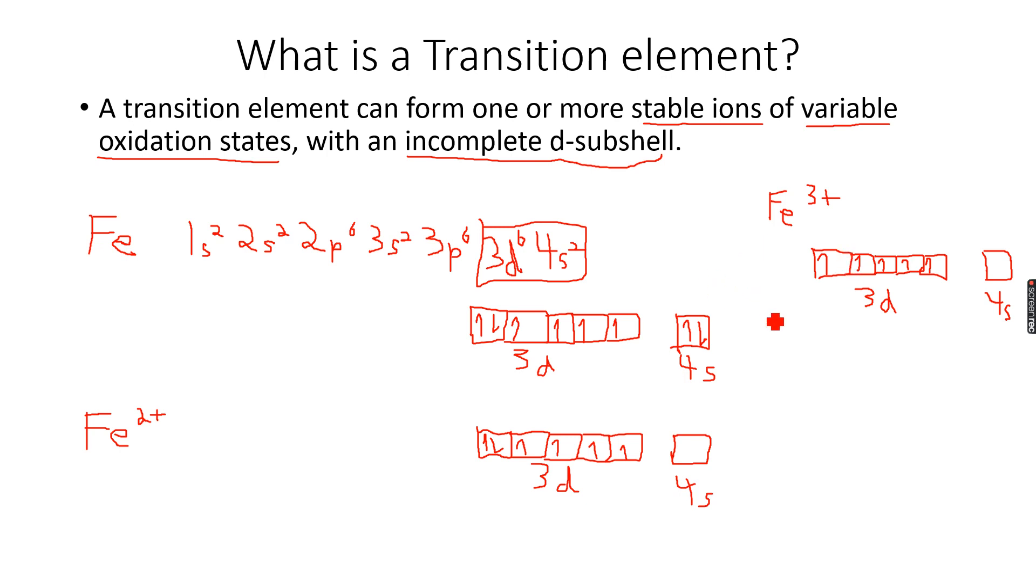This is basically the definition of transition elements. Before we move further in the chapter, I want to do another recap with you of chromium and copper, the two exceptions. Now that I've explained the role of 4s and 3d to you, I want you to know that chromium and copper's outermost electronic configuration doesn't really fill the way it's supposed to.